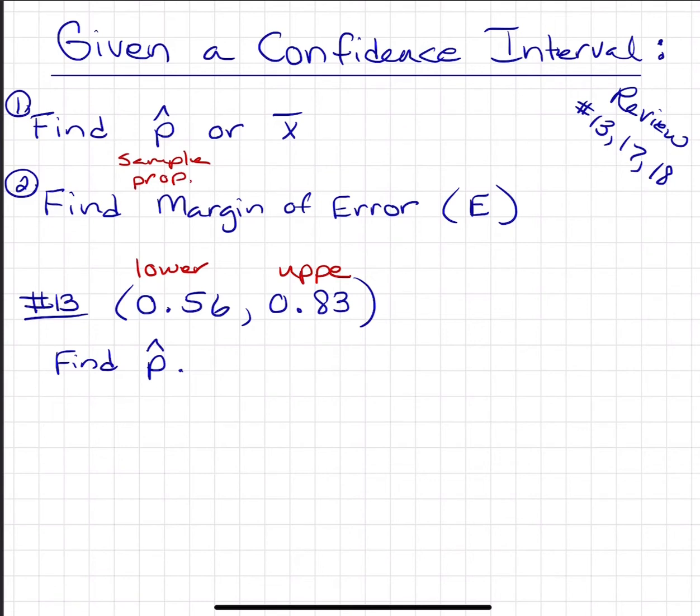P hat is your sample proportion, or X bar is your sample mean, and the margin of error, usually I'll use just a capital E to show that.